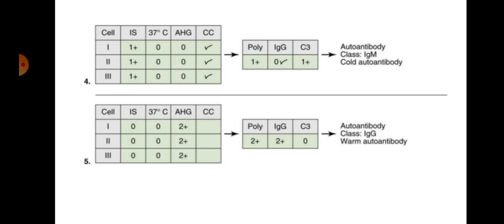Equally important as the detection of clinically significant antibodies is the recognition of false positive reactions and their potential causes. Reactions that appear to be agglutination can cause unnecessary testing and delay if transfusions are needed. False positive reactions can be caused by rouleaux, antibodies to preservatives, fibrin contamination of the sample, and presence of cryoprecipitate from frozen samples. Polyethylene glycol or PEG can cause false positive reactions if reactions are read at 37 degrees Celsius. Before extensive workups are initiated, investigating the patient's diagnosis, reviewing methodologies, and obtaining a new sample are recommended.